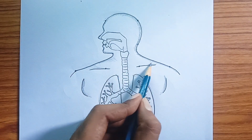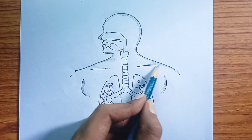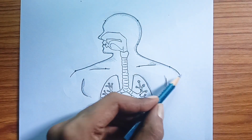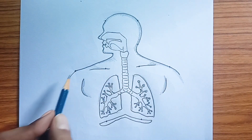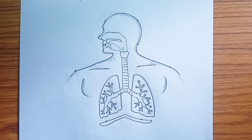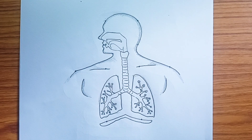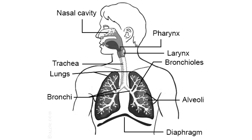In summary, air enters through the nasal cavity, passes through the pharynx, larynx, trachea, bronchi, and bronchioles, eventually reaching the alveoli where gas exchange occurs. The diaphragm assists in the mechanics of breathing.